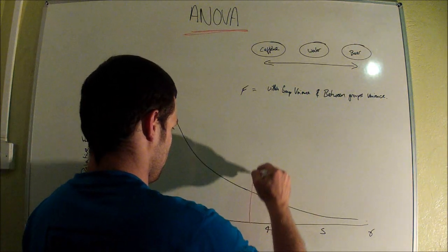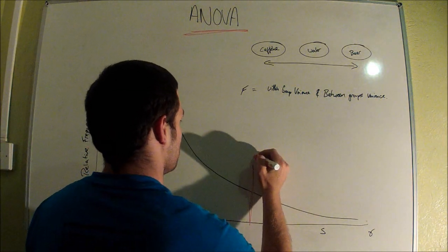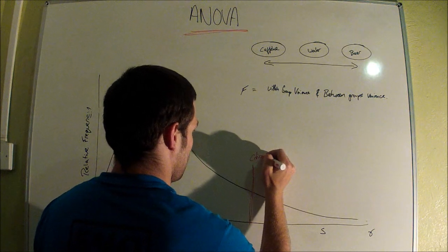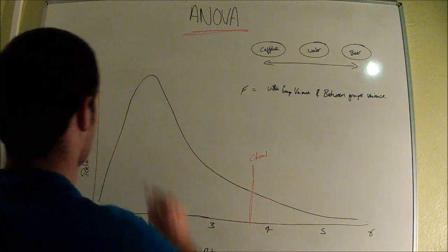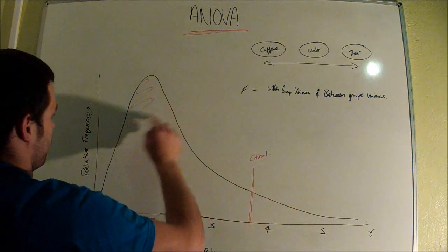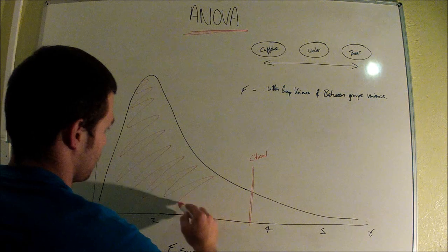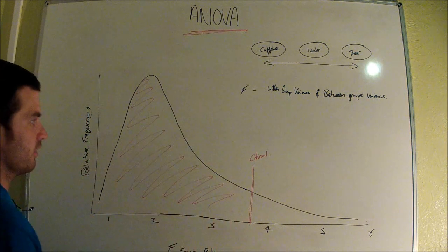That might be roughly along here, for example. That would be our critical F, and depending on which side your calculated F falls—if it falls on this side of the frequency, this is where the majority of the data lies—